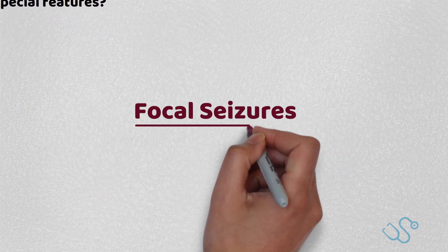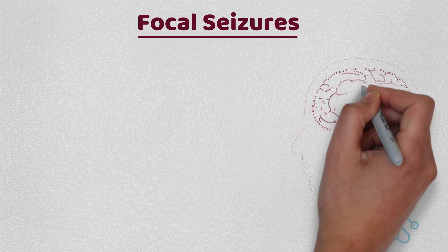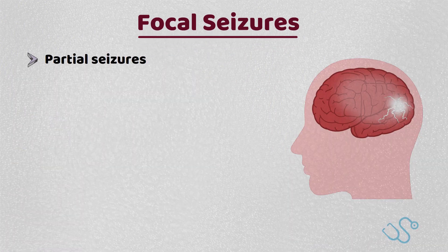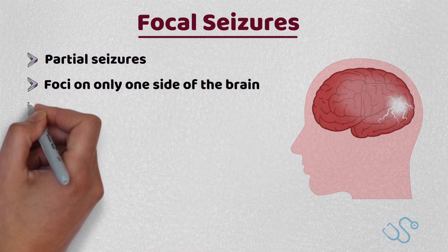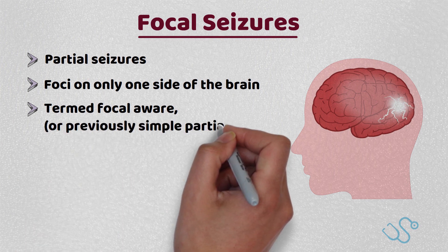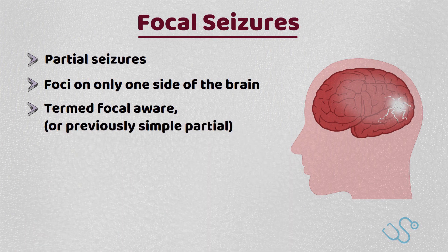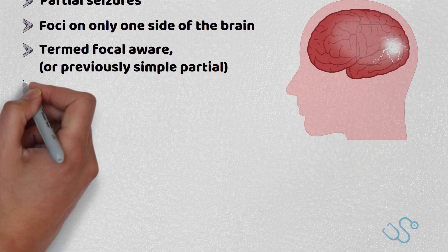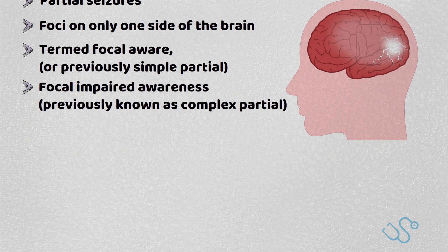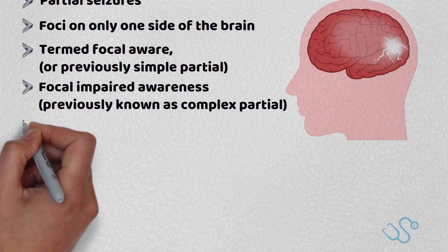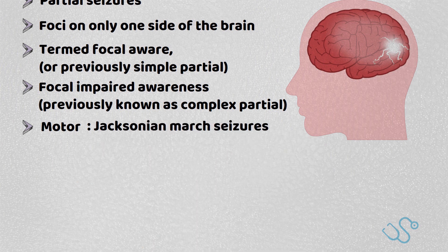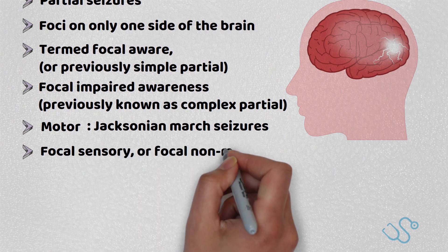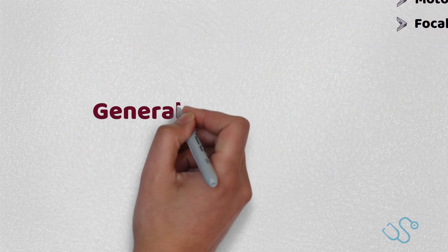Let's start with focal seizures. Traditionally this is what used to be known as partial seizures, with the foci only on one side of the brain. If the conscious level of the seizures isn't affected, they are termed focal aware, or previously known as simple partial. If consciousness is impaired, they are defined as focal impaired awareness, or previously known as complex partial. If there are motor features, it will be classified as a motor seizure, such as a Jacksonian march seizure. If there are non-motor or sensory features, they'll be called focal sensory or focal non-motor.